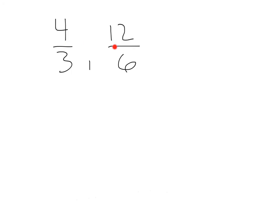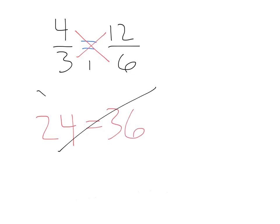How about 4/3 and 12/6? Again, let's set these equal to each other and cross-multiply. We'll get 4 times 6, that's 24, equals 3 times 12, that's 36. Those are not equal, so these do not form a proportion.